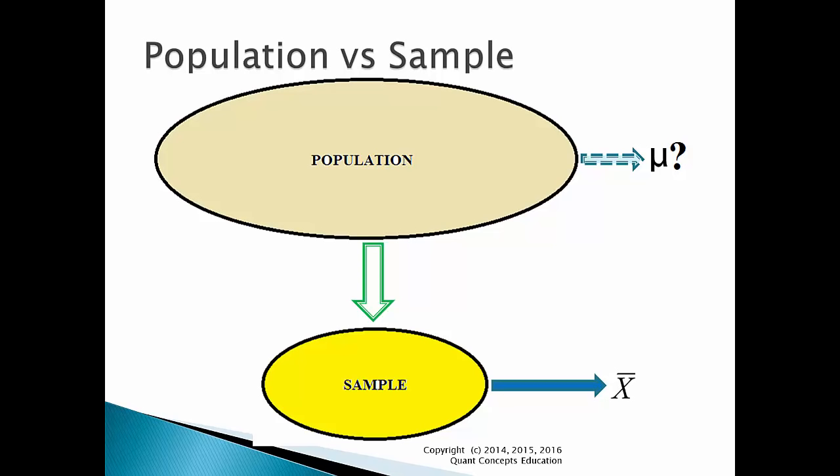Let's walk through this concept one more time. Suppose someone claims that the true average height of males is equal to 175 cm. This is the population average, which we cannot observe. The population of males on Earth is very big — too big for us to calculate the average. So how can we test whether this claim is correct? We can take a random sample of 50 males, and suppose we calculate the sample average height to be 176 cm. Notice that the sample average, 176, is very close to the claimed population average of 175. So this provides us with evidence that the population average is likely to be equal to 175 cm. Note that the sample average does not have to exactly equal the population average, as there is always going to be some sampling variation in the sample mean because we used a random sample.